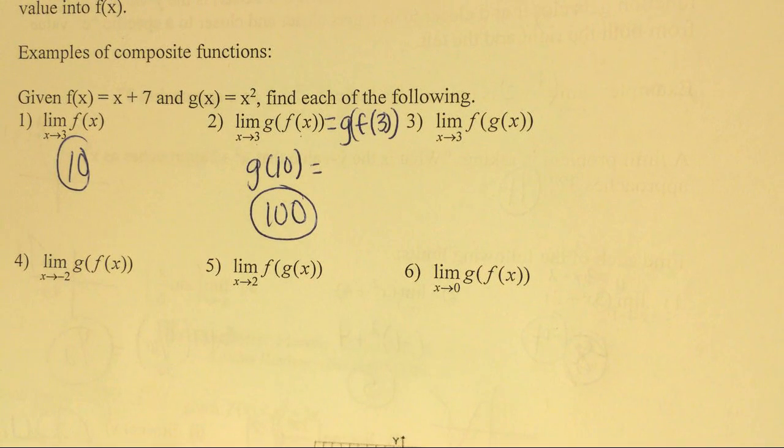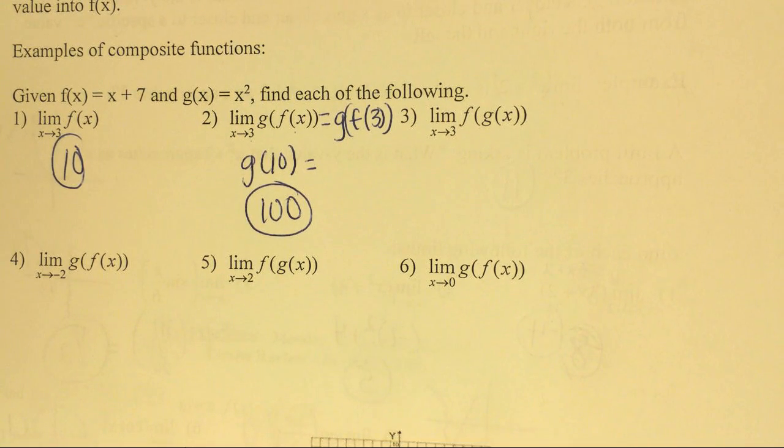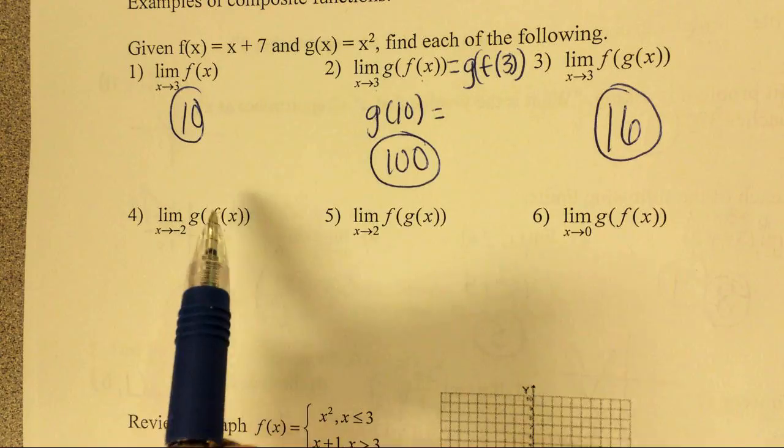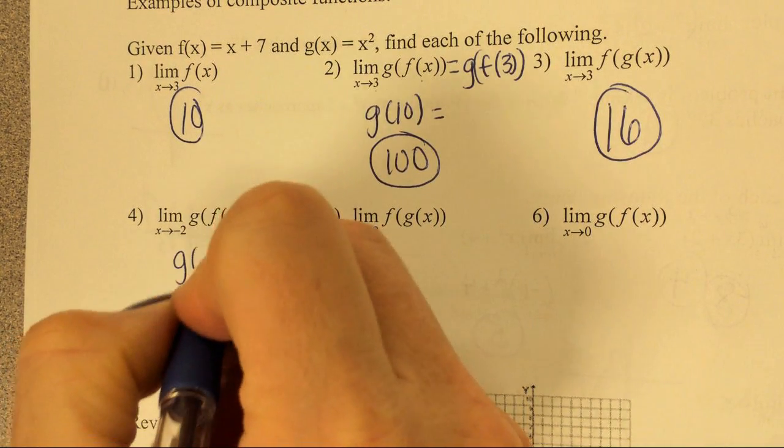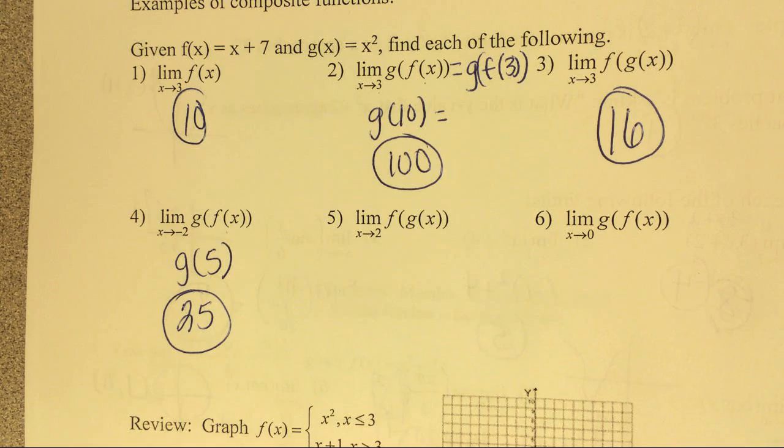All right, so, you guys try number three now. Jackson, what'd you get? Do we agree, sixteen? Do we agree, sixteen? That is correct. Okay, next one. Again, we're just going to plug negative two into our f function. So, negative two plus seven is five. So, then all we have to do is g of five, twenty-five.